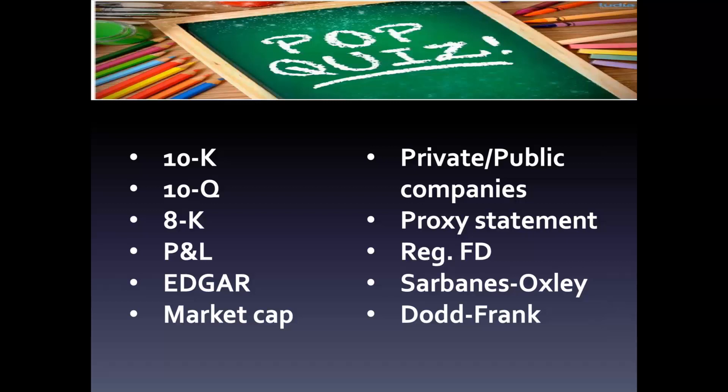The 10-Q is the same as the 10-K but a quarterly report — filed once every three months, once every quarter, and very similar in structure to the 10-K. You can find it in the EDGAR database and on many company websites as well.